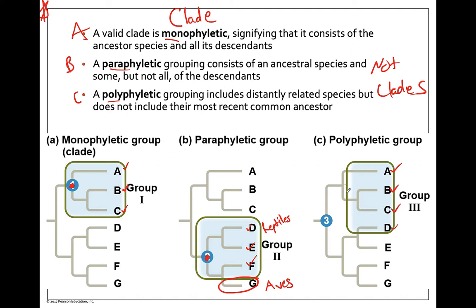So A, B, and C have an ancestor, but D is also included in this group. The most recent common ancestor for A, B, C, and D would have to be included, but if we discuss the group concerning A, B, C, and D while excluding that ancestor, this is a polyphyletic group and not a clade. We often do this with protists — we group them together based on similarity, but we don't discuss the most recent common ancestor because protists are all over the map, so there are many polyphyletic groups there.